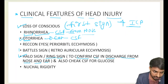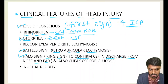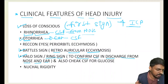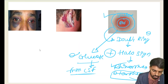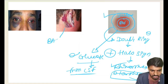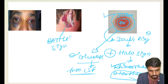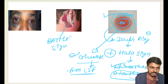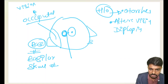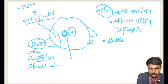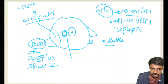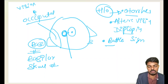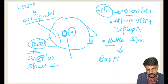The battle sign is retroauricular ecchymosis — 'retro' meaning behind, 'auricular' meaning ear — so blood accumulates behind the ear. This is called retroauricular ecchymosis or battle sign. In exam questions, when the history includes otorrhea, diplopia, and battle sign, the answer is basilar skull fracture — very important for competitive exams.